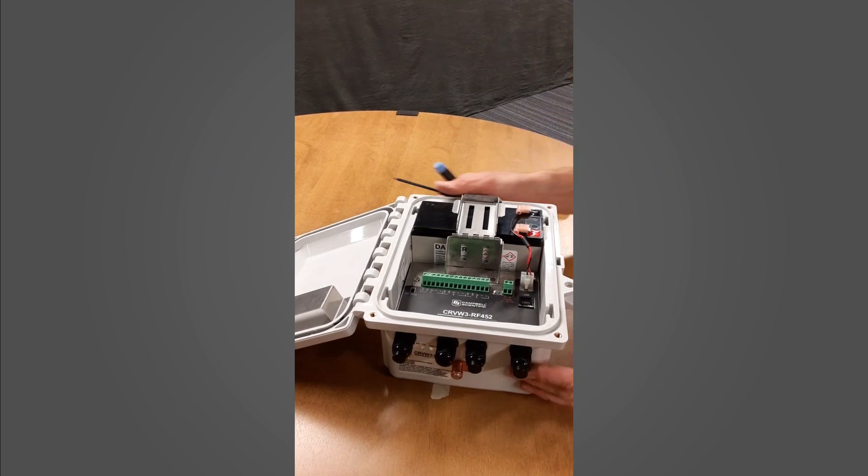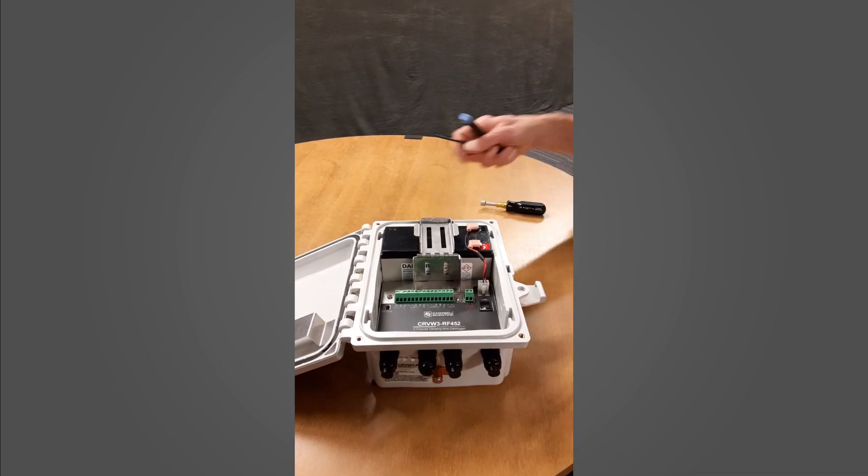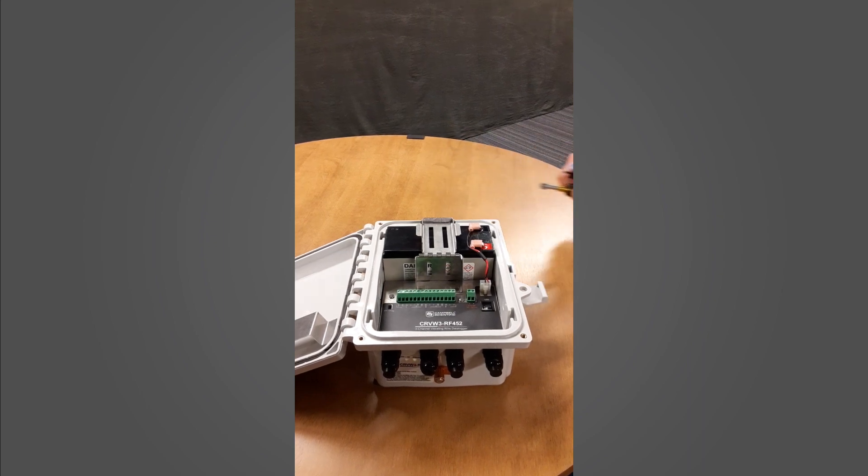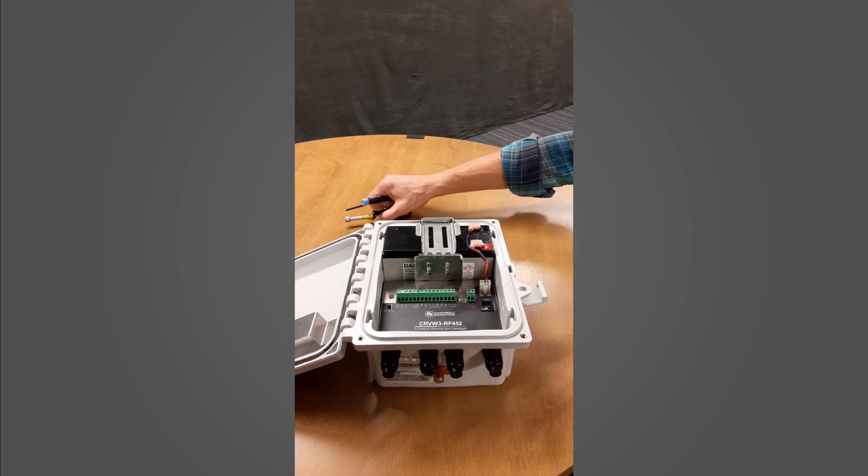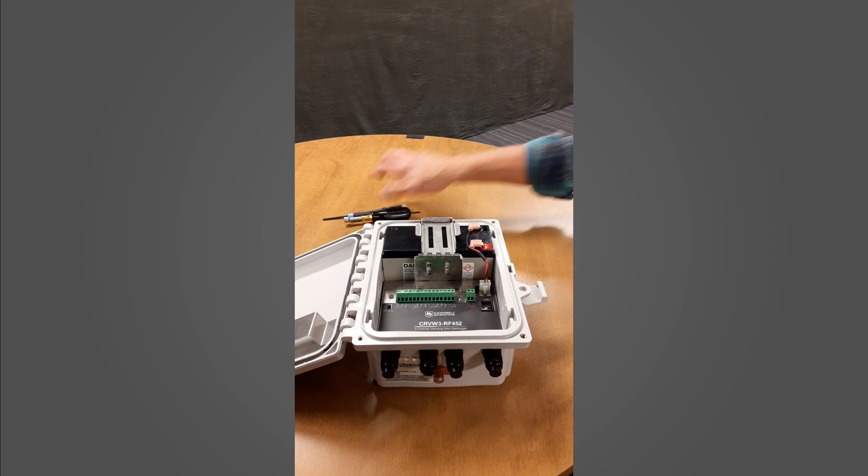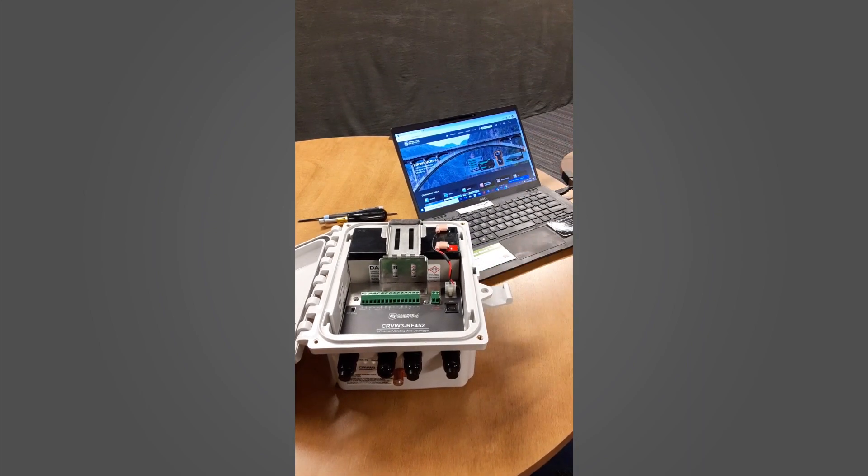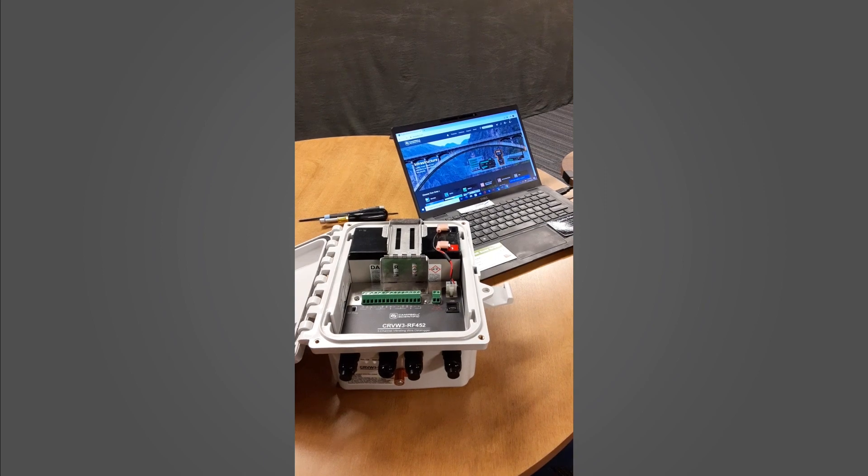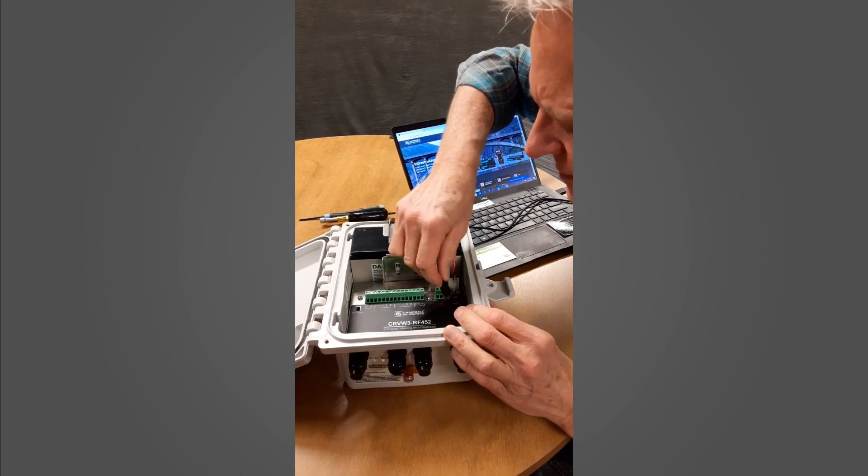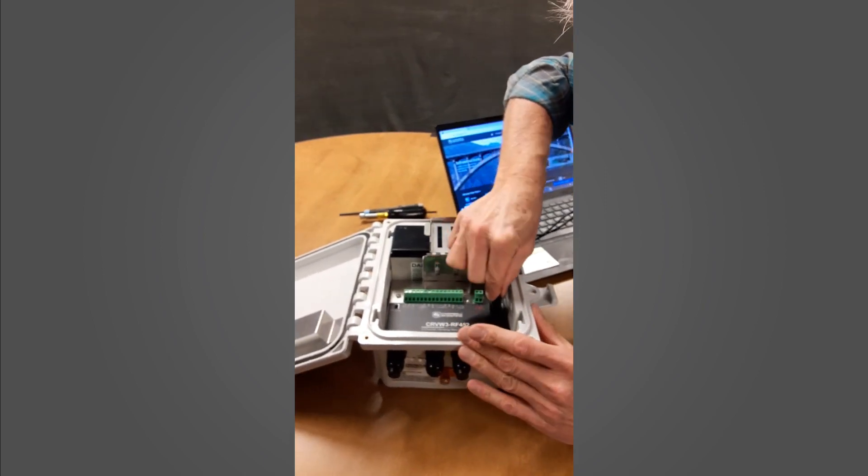Now that we have changed the lithium battery, we will want to set the data logger clock because that battery keeps the real-time clock alive. Once we connect to this, we will see that the battery has been halted back to a beginning date of the CRBW3.